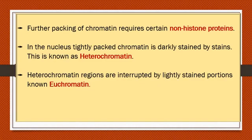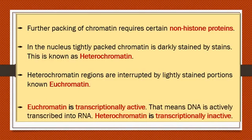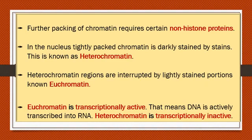The euchromatin region is transcriptionally active — the DNA is actively transcribed into mRNA. Heterochromatin is transcriptionally inactive. Heterochromatin can be converted into euchromatin when transcription is activated.